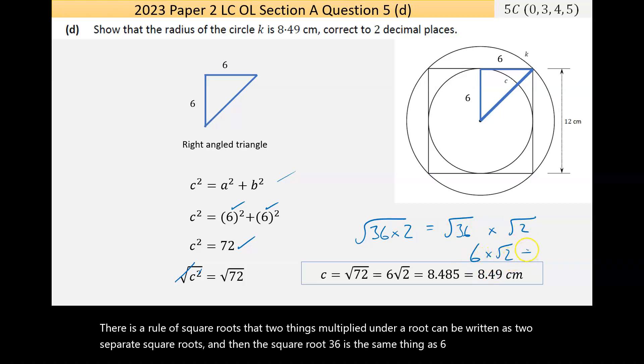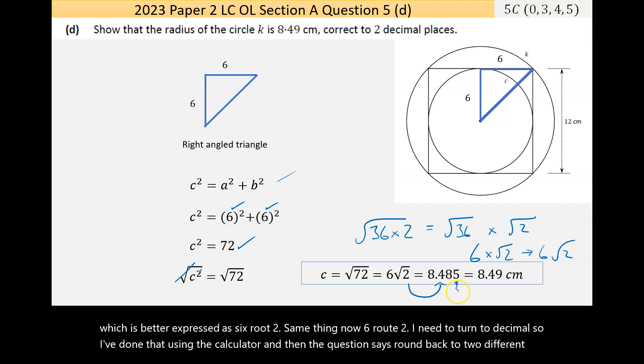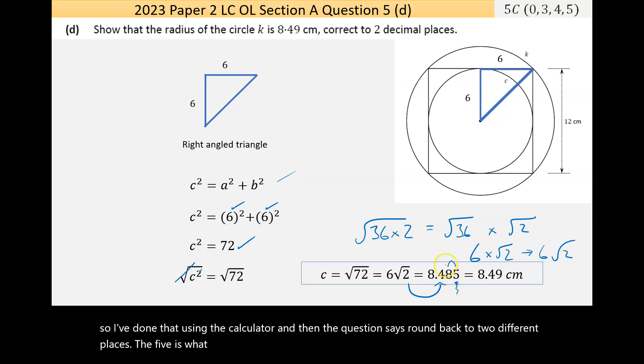It's the same thing. Now 6√2 I need to turn to decimal, so I've done that using the calculator, and then the question says round that to two decimal places. The five is what matters and it makes the number prior to it round up by one, and I get my 8.49 centimeters. So the radius is 8.49 centimeters and I probably should have said 'true' or 'shown' or whatever.